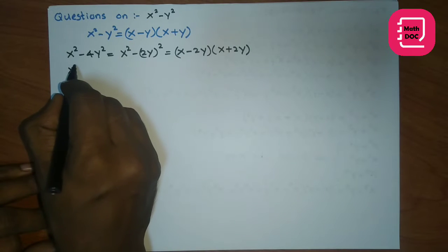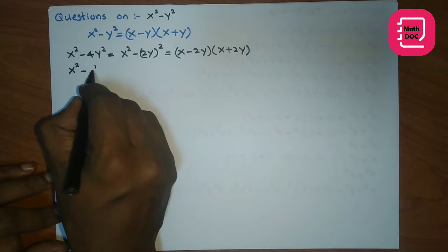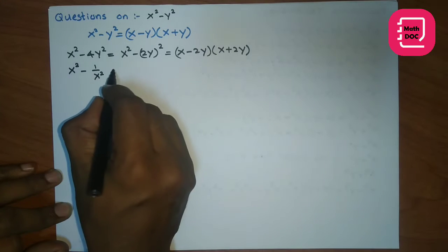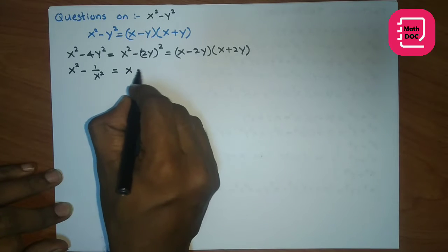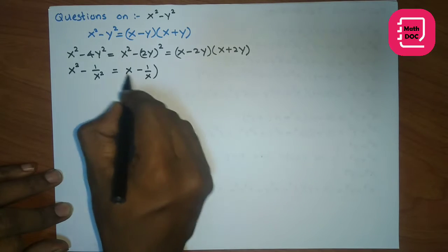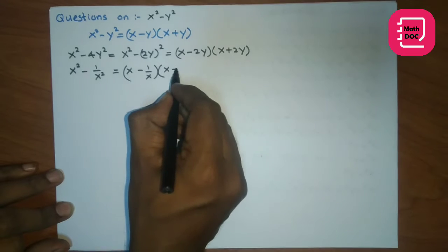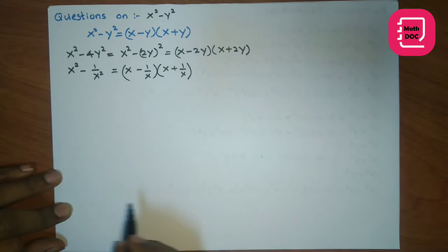Then let's take another example: x-squared minus 1 over x-squared. That's also difference of two squares. Then you get the factors x minus 1 over x times x plus 1 over x. Those are the factors.